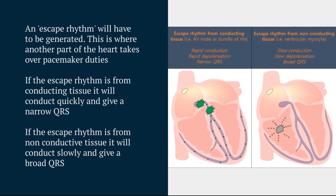But sometimes the escape rhythm is generated from the ventricular myocytes, and this gives a slower conduction and slower depolarization. Because it takes longer for the heart to depolarize, you get a broad QRS.